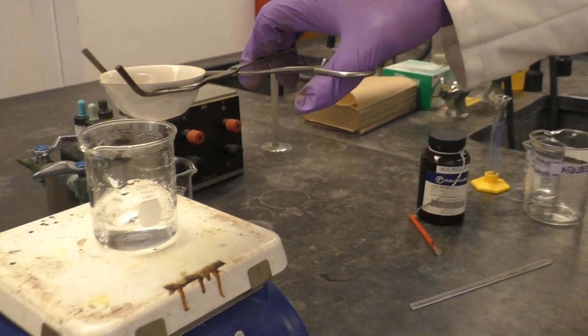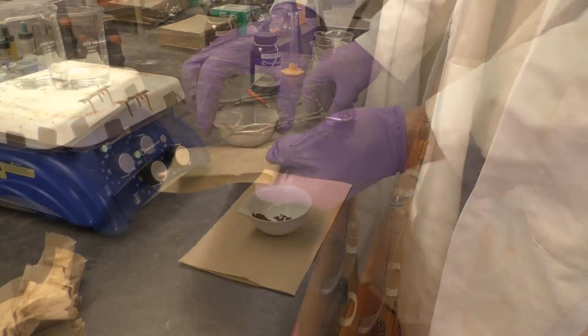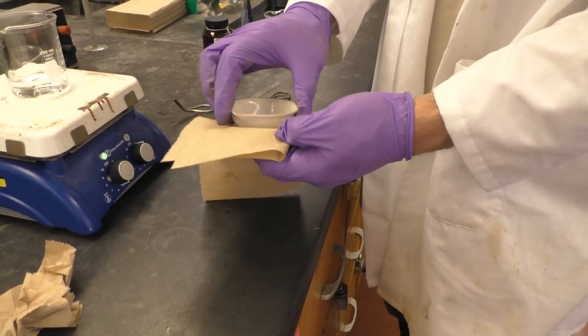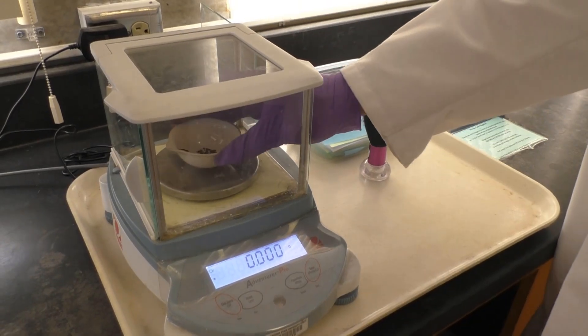Once your final copper product is completely dry, just take your dish off the steam bath, allow it to cool, wipe off all the water on the bottom, and then obtain its mass.